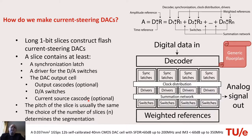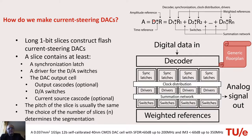First of all, how do we make a current steering DAC? This is the abstract main equation for a digital-to-analog converter. We have here the analog output A, which is the product of the digital word and two references: an amplitude reference and a timing reference. The digital word is just a series of ones and zeros, and to convert this digital data to the analog world we need to align it to a certain rate — this is the timing reference, the clock — and a certain amplitude.